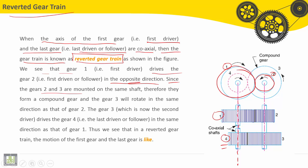Since the gear two and three are mounted on the same shaft, therefore they form a compound gear, and the gear three will rotate in the same direction as that the gear two.